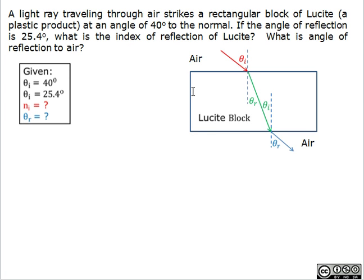So here's the diagram of refraction of light coming from air, going through the lucite block, and coming back to air.